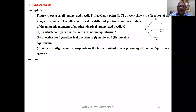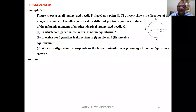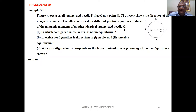Example 5.5: The figure shows a small magnetized needle P placed at a point O. The arrow shows the direction of its magnetic moment. The other arrows show different positions and orientations of the magnetic moment of another identical magnetized needle Q. In which configuration is the system not in equilibrium?